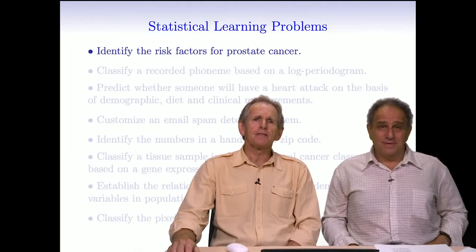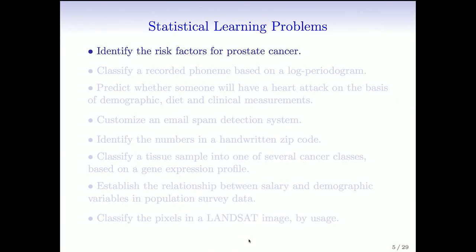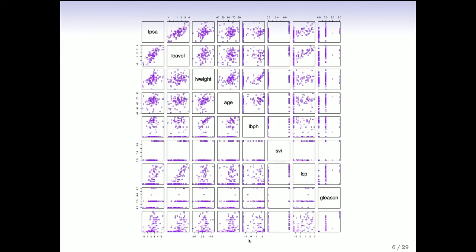We're going to run through a number of statistical learning problems — you can see a bunch of examples on this page, and we'll go through them one by one to give you a flavor of the sorts of problems we'll be solving. The first dataset is on prostate cancer. This is a relatively small dataset — 97 men sampled by a Stanford physician, Dr. Stamey, in the late 80s.